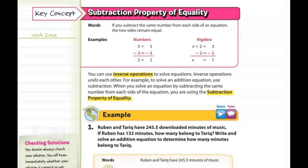If you subtract the same number from each side of the equation, the two sides remain equal, and that is important in an equation — it has to remain balanced. So if you do something to one side, you have to also do it to the other side. That's something we've actually been practicing all year long, that whole idea of keeping things balanced, doing the same thing to each side.